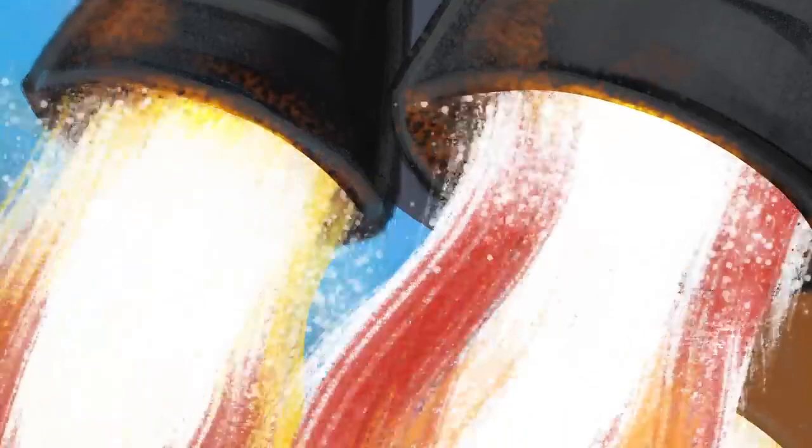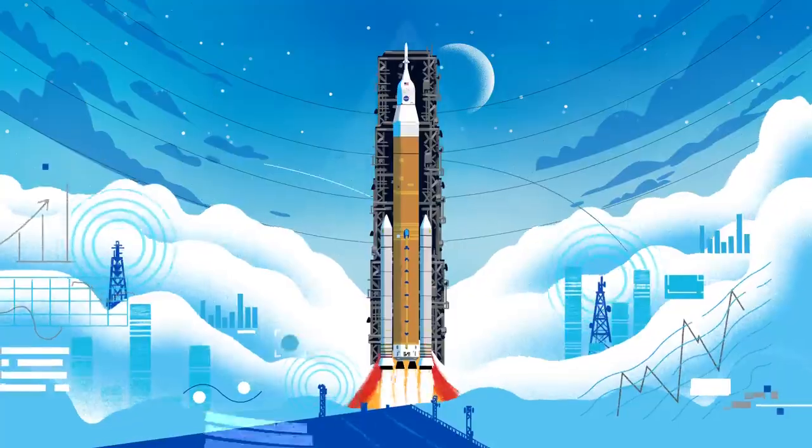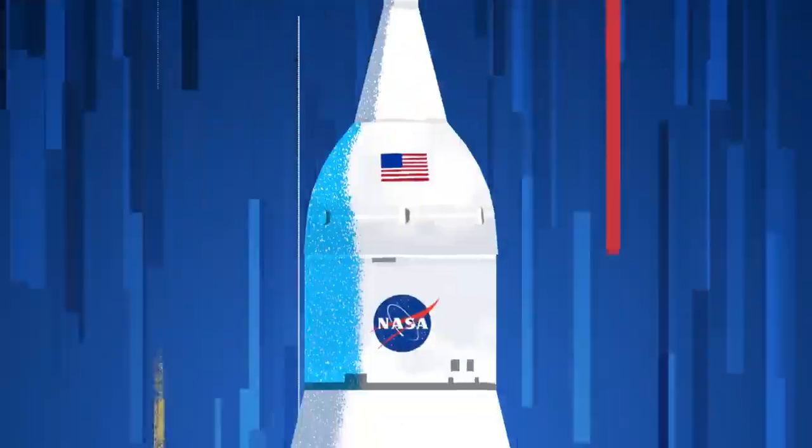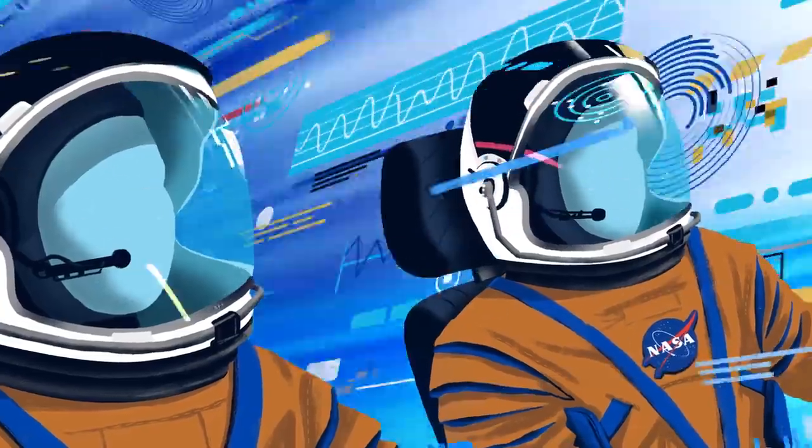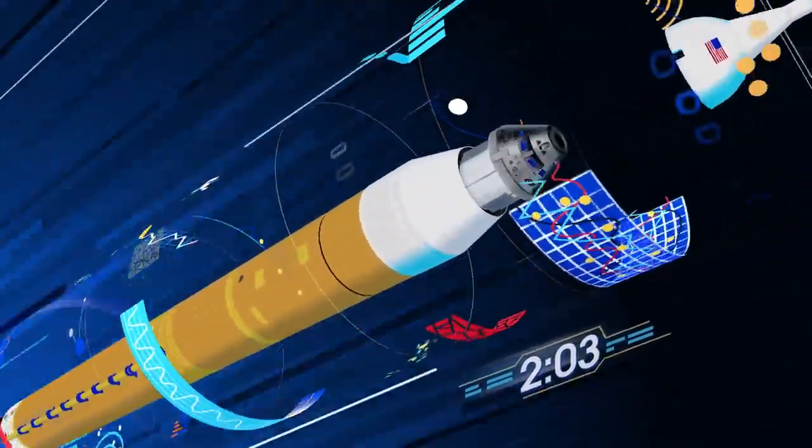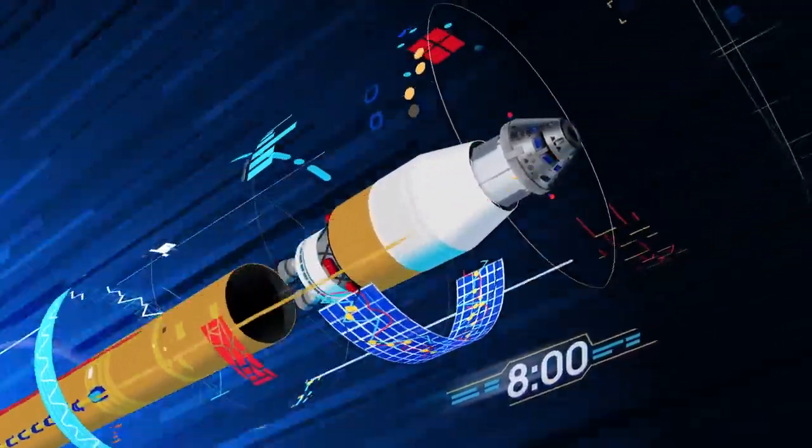Once ignited, there's no stopping what comes next. All four RS-25 engines and the two solid rocket boosters come to life, thundering our crew upwards. Two minutes after ignition, the solid rocket boosters are spent and released. Eight minutes after launch, the core stage is depleted and separated.